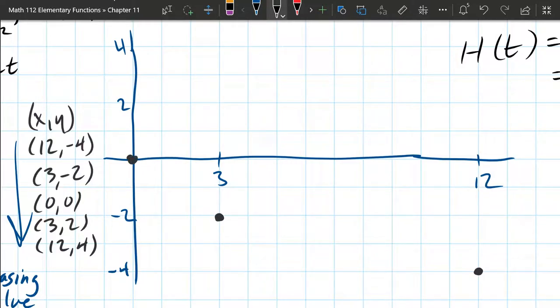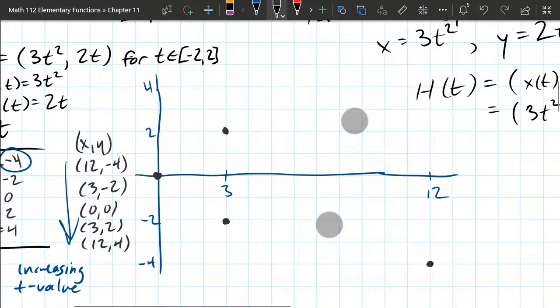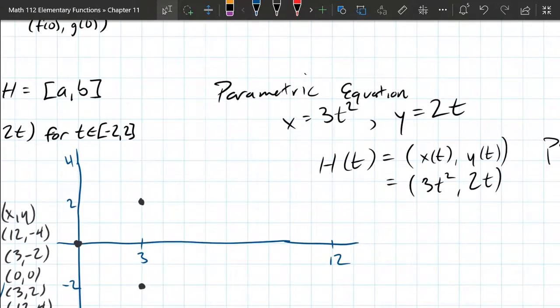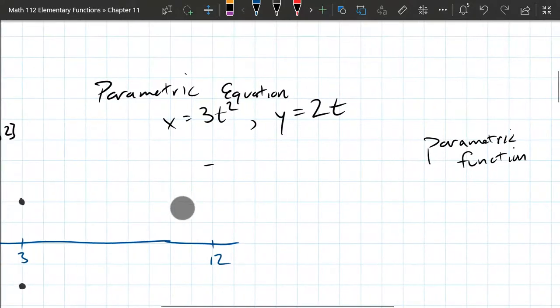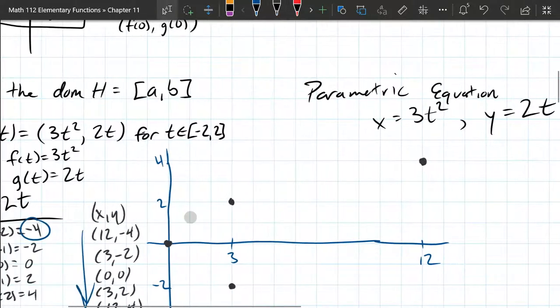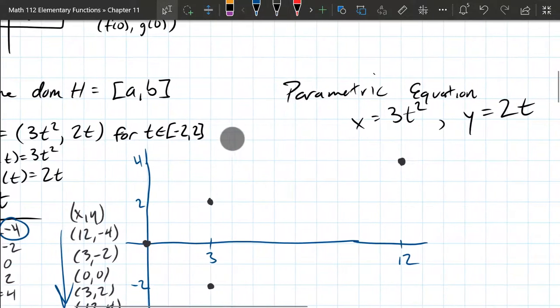Now (3, 2), over three, up two. And (12, 4) is, unfortunately, right where I wrote all this stuff. I'll just erase this. I already have that written down. (12, 4). Okay, so these are the five points.